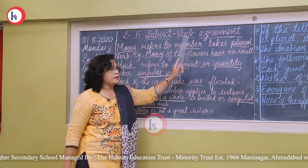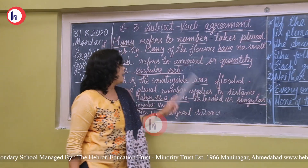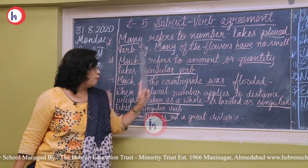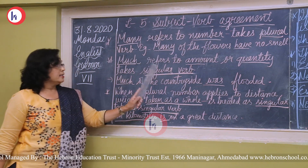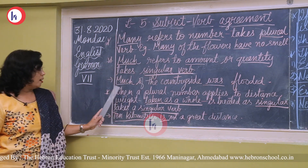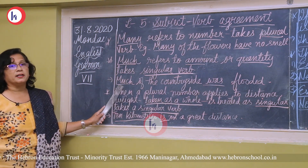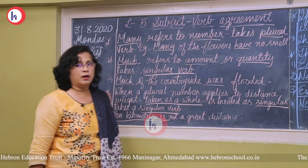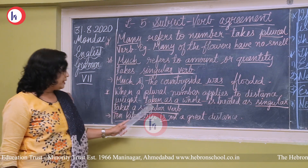'Many' refers to a number and takes a plural verb. For example: 'many of the flowers have no smell.' 'Much' refers to amount or quantity and takes a singular verb, because the exact number is not shown. For example: 'much of the countryside was flooded' uses singular 'was.'